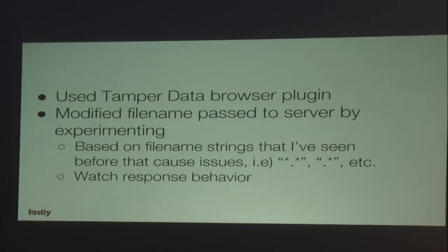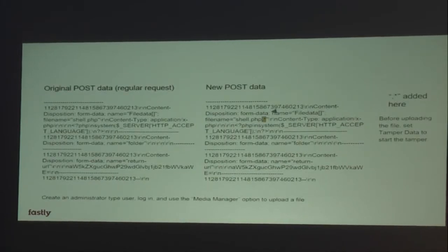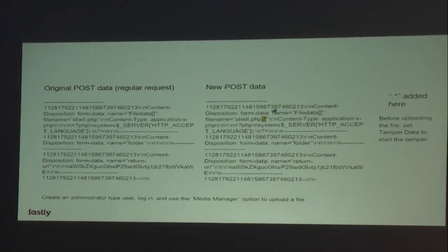For my manual testing, I used tamper data — a browser plugin — and modified the file name being passed from the browser to the vulnerable server by experimentation, based on file name strings I've seen before that caused issues: permutations with star, dot, star, dot, star, etc. I watched the response behavior. As you can see here in my post data, I found that when I appended a dot-star to the file name, that was when I was able to induce that vulnerability.